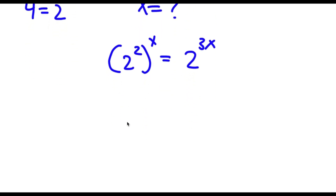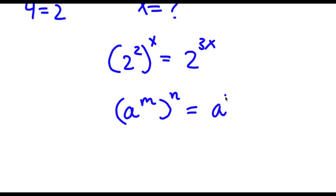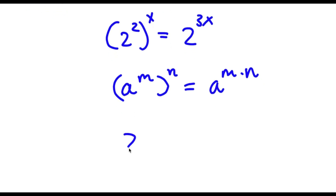Now if I have something in the form a to the power of m to the power of n, this is equal to a to the power of m times n. So 2 to the power of 2 to the power of x is going to equal 2 to the power of 2 times x, which is the same thing as 2x. And this is equal to 2 to the power of 3x.